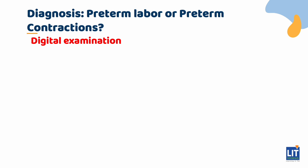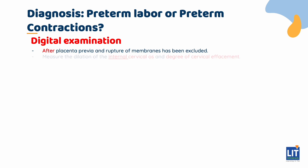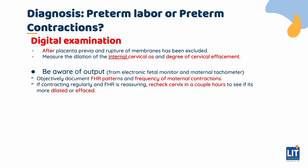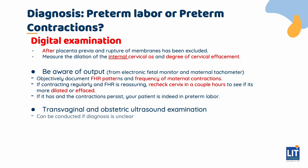After placenta previa and rupture of membranes has been excluded, proceed to the digital cervical exam to measure the dilation of the internal cervical os and degree of cervical effacement. Be constantly aware of the output from the electronic fetal monitor and the maternal tachometer, which allow you to objectively document fetal heart rate patterns and frequency of contractions. If contracting regularly with a reassuring fetal heart rate pattern, recheck the cervix in a couple of hours. If it has become more dilated or effaced and contractions persist, the patient is in preterm labour. If the diagnosis is unclear, a transvaginal and obstetric ultrasound can be used for further evaluation.